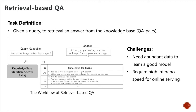However, when dealing with text-matching problems in real-world industrial-scale QA applications, we are facing two prominent challenges. First, we need abundant data to learn a good model with high accuracy. Second, we need a high inference speed for online model serving, because for each user query, we need to answer the query as soon as possible.